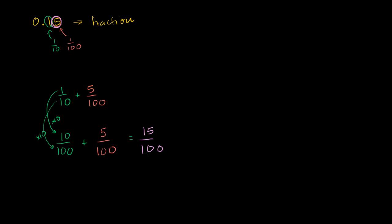And now if I want to reduce this to lowest terms, let's see, both the numerator and the denominator is divisible by 5. So let's divide them both by 5. And so the numerator, 15 divided by 5, is 3. The denominator, 100 divided by 5, is 20. And that's about as simplified as we can get.